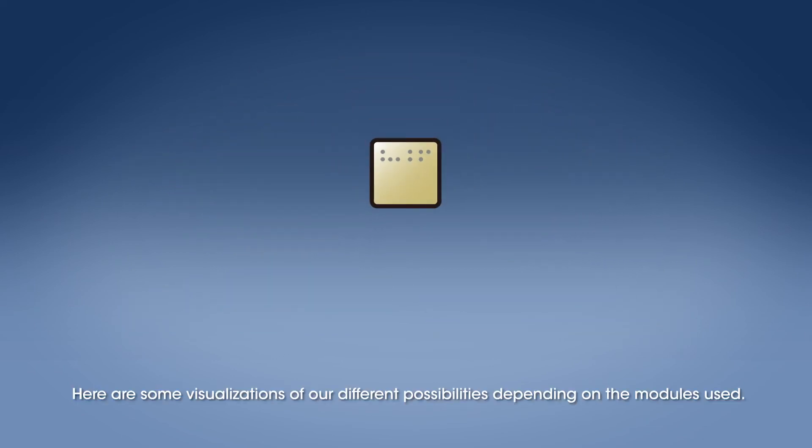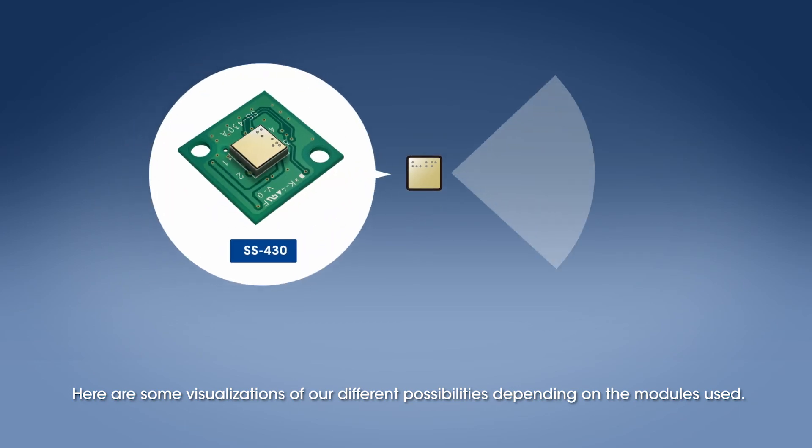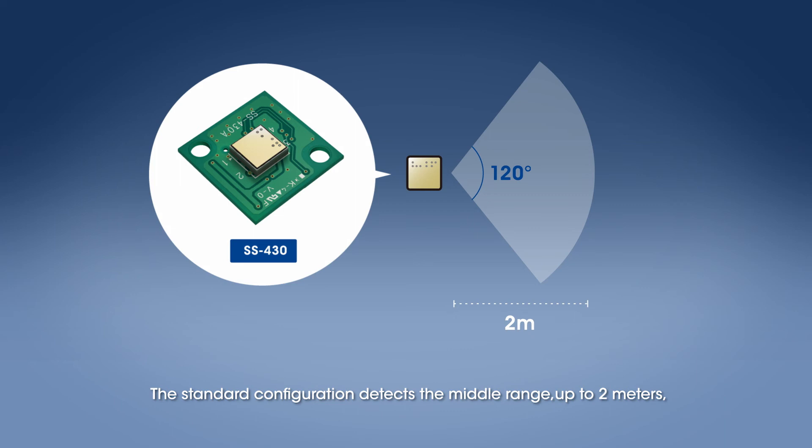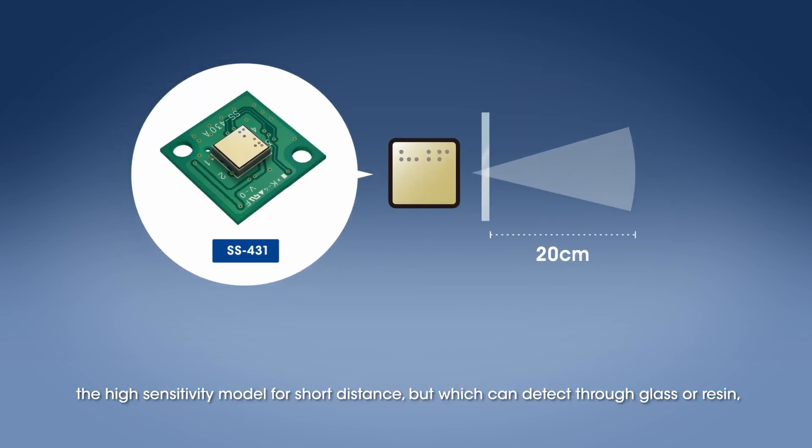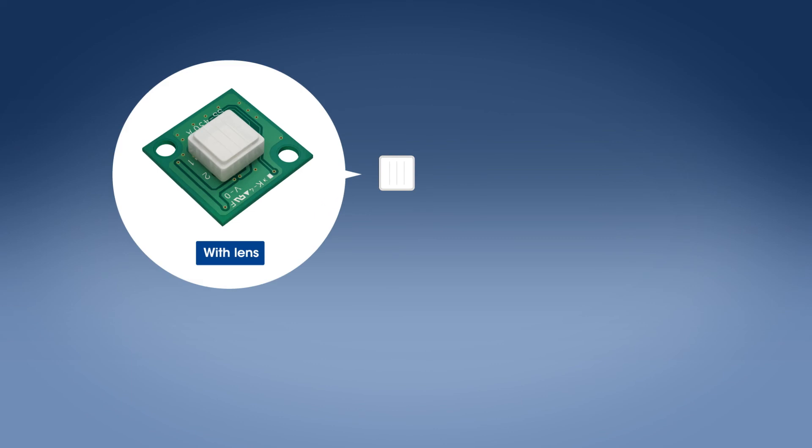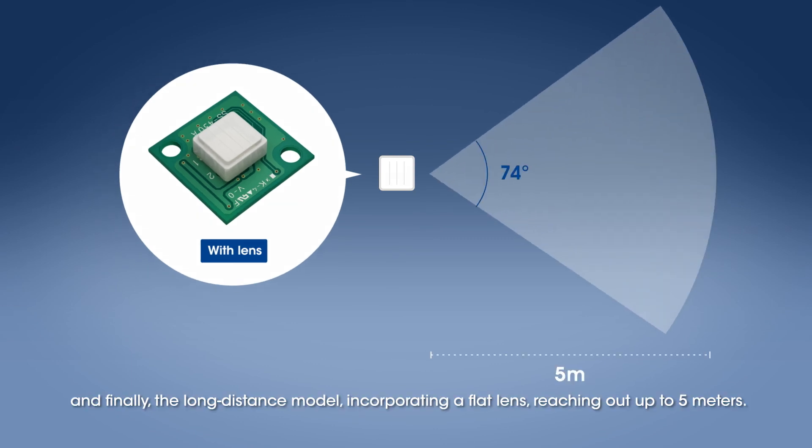Here are some visualizations of our different possibilities depending on the modules used. The standard configuration detects the middle range up to 2 meters. The high sensitivity model for short distance, but which can detect through glass or resin. And finally, the long distance model incorporating a flat lens reaching out up to 5 meters.